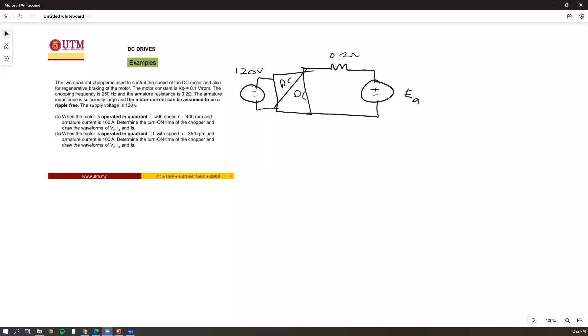Okay, assalamualaikum warahmatullahi wabarakatuh. This is example number three in the DC motor drive. The two-quadrant chopper is used to control the speed of the DC motor and also for regenerative braking, meaning for forward motoring and also for the forward braking.